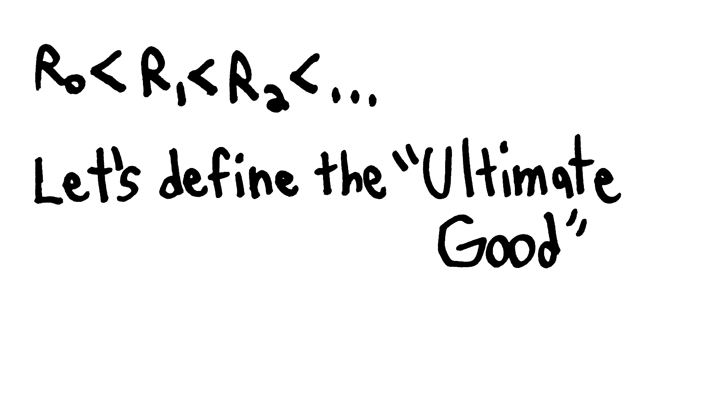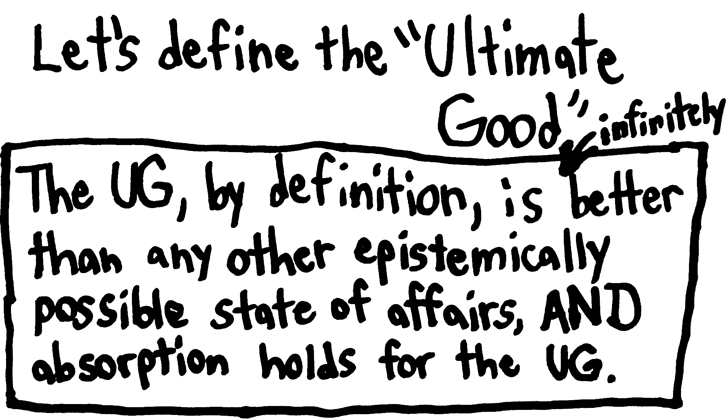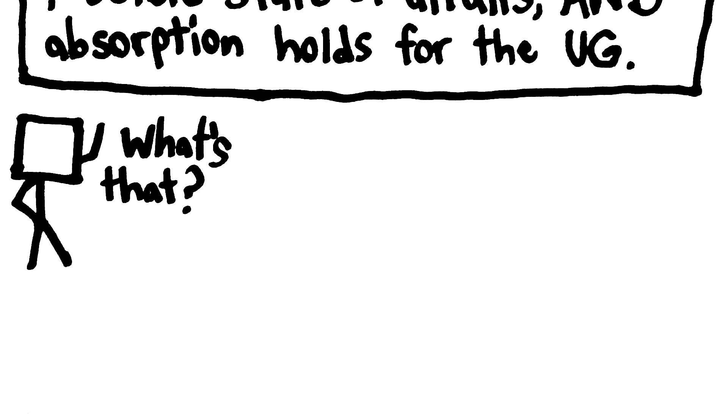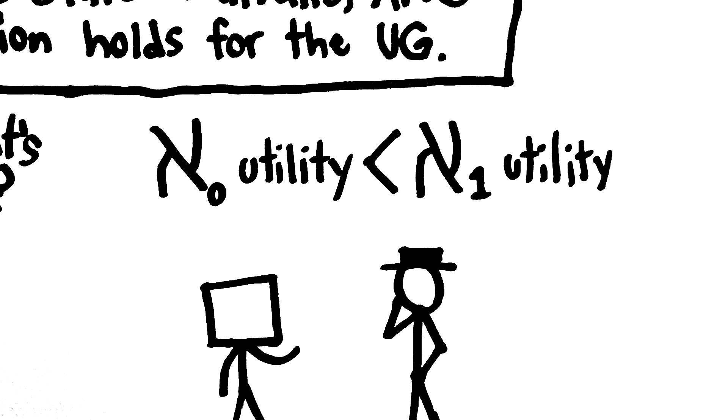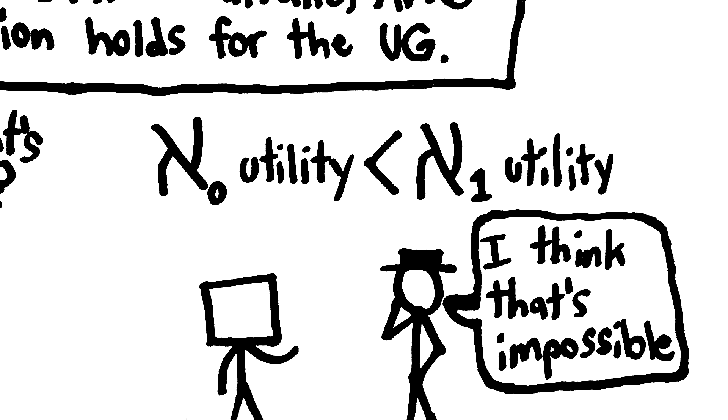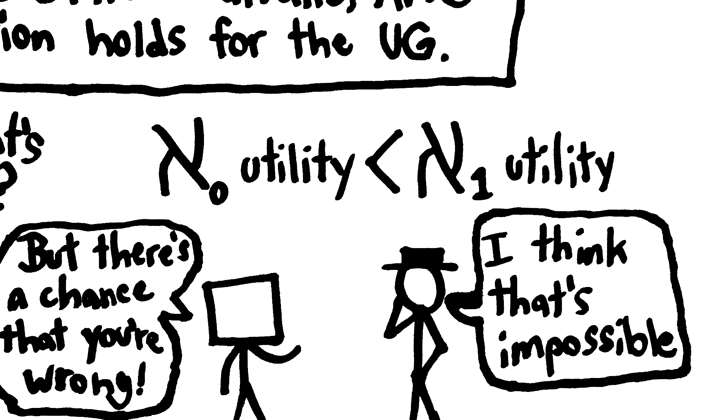Let's get around this by defining a specific epistemically possible state of affairs, called the ultimate good. The ultimate good is, by definition, infinitely better than any other epistemically possible state of affairs, and absorption also holds for the ultimate good. What does that mean? By way of analogy, the logic of Pascal's wager tells someone who thinks that, say, the state of affairs of achieving Aleph 1 utility is probably impossible or incoherent in reality, should still act on the chance that they're wrong because there's still some epistemic probability that Aleph 1 utility can be achieved.